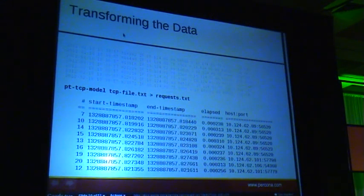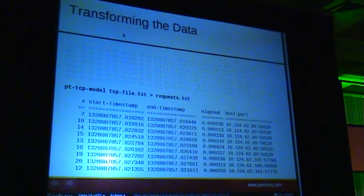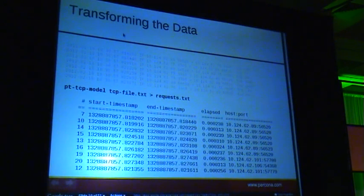Now we've got this and we can do interesting things with it. This allows us to skip spreadsheets, because spreadsheets on large amounts of data like this are a nightmare. This is the same arrival and departure timestamps converted to a Unix timestamp format, and then the difference — 238 — and then the port 56520 that we saw from that application. I'm using a single sample of TCP data. There's a white paper on percona.com that walks through everything I'm talking about today and has a link to this data, so you can download it, run these tools, and reproduce my results.